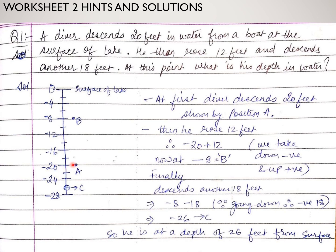This negative just shows that he is coming downside. Now, after reaching this position, it is given in the question that he then rose 12 feet. So he is again going up. Whenever you go up, you take it as positive. So he is going up 12 feet. Earlier he was at minus 20; now he is going plus 12 because it is going in the upward direction. When you have one negative number and one positive number, they will be subtracted and the sign of the larger number will come. So 20 and 12 difference is 8 and negative sign will come. So right now he is at minus 8, at point B.